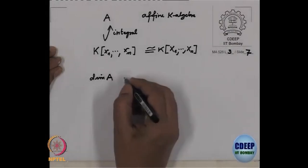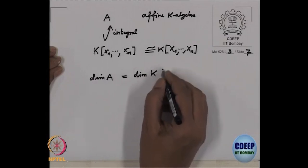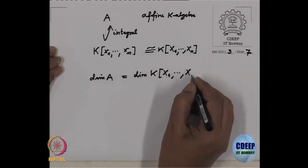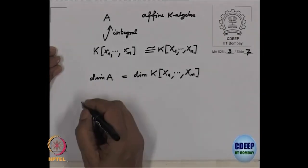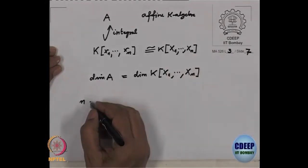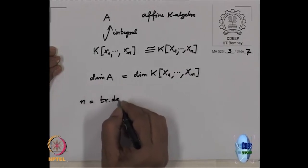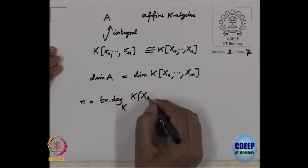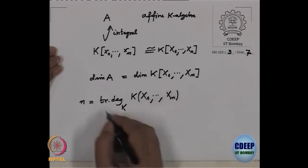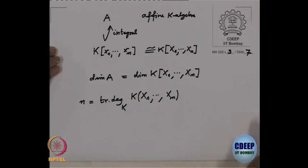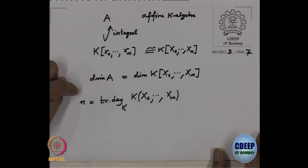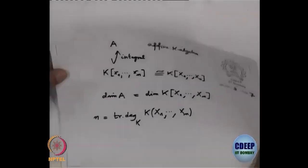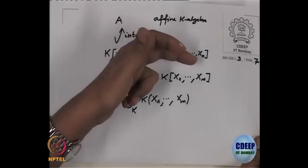Dimension of A is equal to dimension of the polynomial algebra in N variables. And this integer N is nothing but the transcendence degree of the rational function field in N variables. This is one way to compute dimension in the case of affine algebras, and it is finite because we are dealing with finite type algebras involving finitely many variables in polynomial rings.